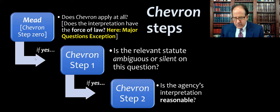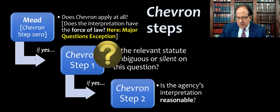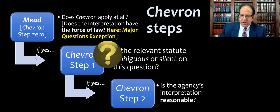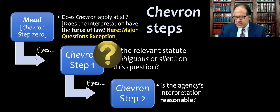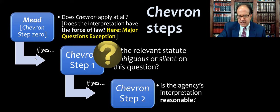Chevron step one would then be: is the relevant statute ambiguous or silent on the question? And if yes, is the agency's interpretation reasonable? The problem is that Brown and Williamson, which kind of brought us the major questions exception to Chevron, was doing it at Chevron step one. But in this case, we're actually doing it a step backwards — at Chevron step zero. This is a surprising sleight of hand by Justice Roberts, who moves through it very quickly at the beginning of the opinion, just assuming there's a major questions exception, and that's why we're not applying Chevron at all — even though we got the major questions exception from a case that was invoking it at Chevron step one.